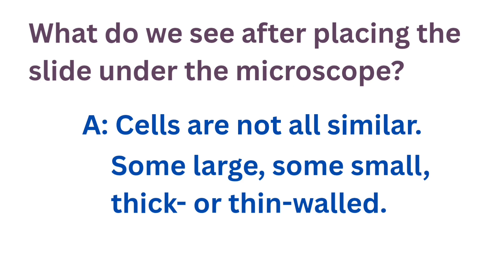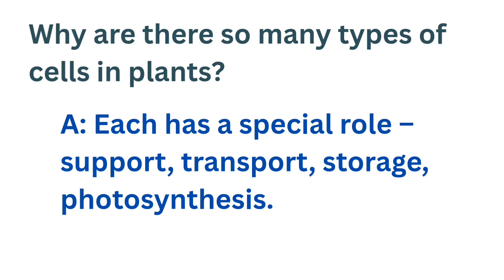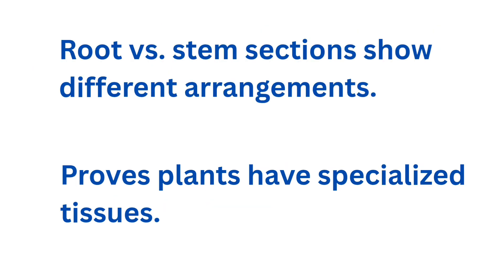After placing the slide under the microscope, are all cells in a plant stem section similar? No — some cells are large, some are small, some have thick walls and some have thin walls. This is because each cell type has its own role: some provide strength, some transport water, some transport food, some store food and some perform photosynthesis. Cutting sections of roots or stems of different plants, we notice differences in arrangement, which proves that plants are made of many specialized tissues for different functions.